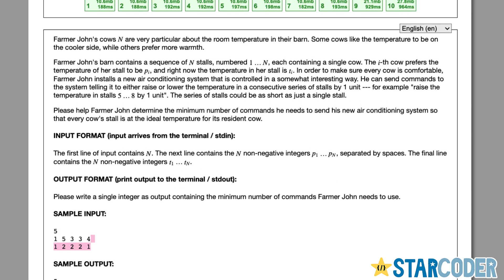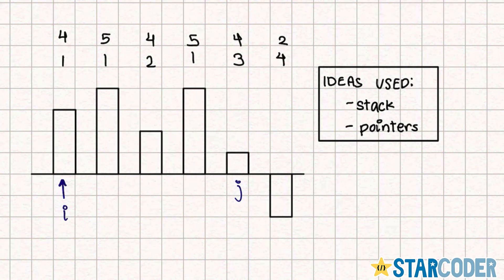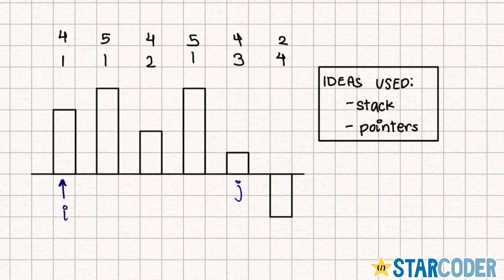Let's look at the algorithm for this question. There are two main steps to solving it, and the first one is creating what's called a difference array from the values we want to get.